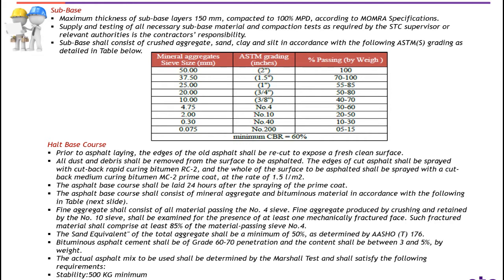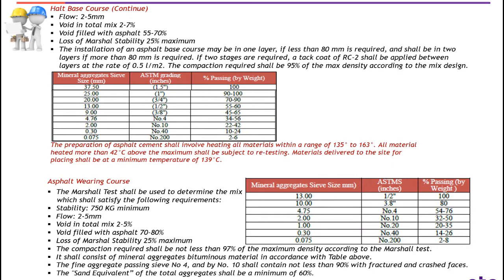Flow: 2 up to 5 mm. Void in total mix: 2 up to 7%. Void filled with asphalt: 55 up to 70%. Loss of Marshall stability: 25% maximum. Installation of asphalt base course may be in a single layer of 0.5 cm if less than 80 mm or 8 cm is required.